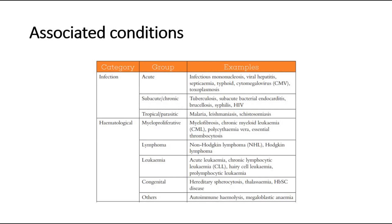For infective causes, it can be acute, like infectious mononucleosis, viral hepatitis, septicemia, typhoid, cytomegalovirus, or toxoplasmosis. Subacute infections include tuberculosis, subacute bacterial endocarditis, brucellosis, syphilis, and HIV. Parasitic infections like malaria, leishmaniasis, and schistosomiasis can cause splenomegaly as well.